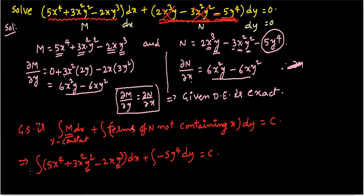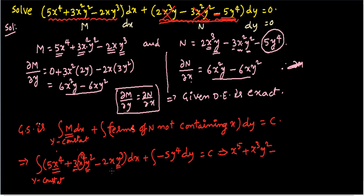Now evaluate the integrals. The integral of 5x⁴ gives x⁵ (the 5s cancel). The integral of 3x²y² gives x³y² (the 3s cancel). The integral of -2xy³ gives -x²y³ (the 2s cancel). Then the integral of -5y⁴ with respect to y gives -y⁵ (the 5s cancel). So the general solution is: x⁵ + x³y² - x²y³ - y⁵ = c.